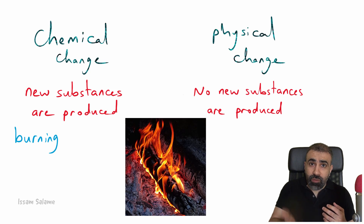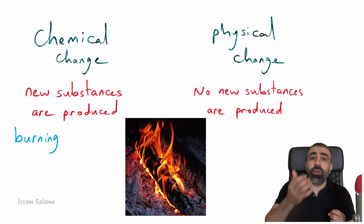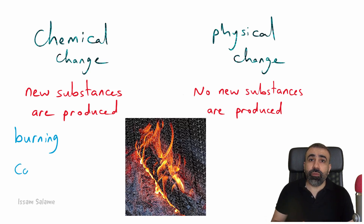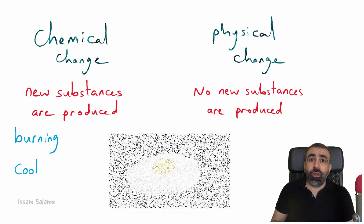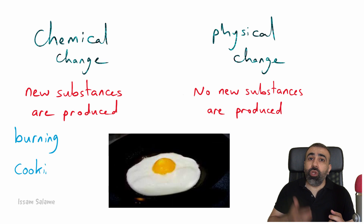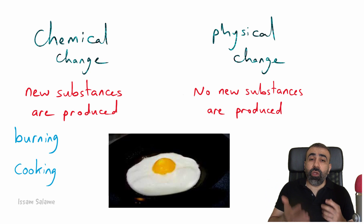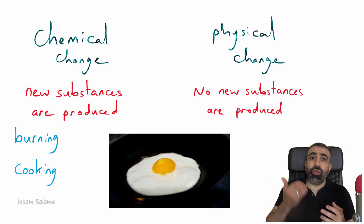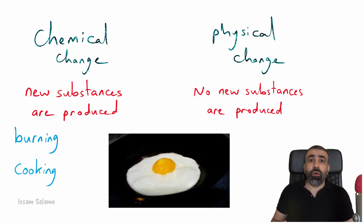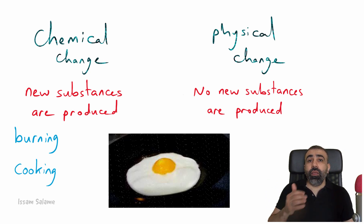So when you have a new substance produced, this is called a chemical change. For example, when you cook food — cooking is a chemical change because when you cook the food, you cannot return it back raw.